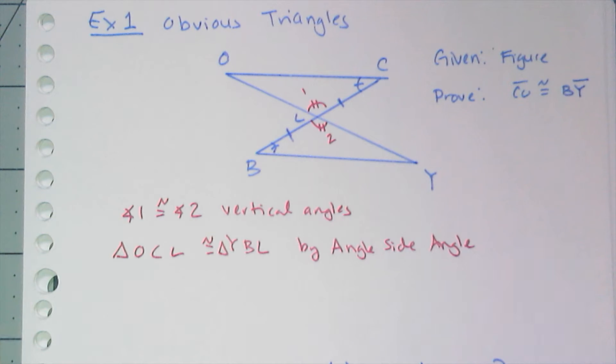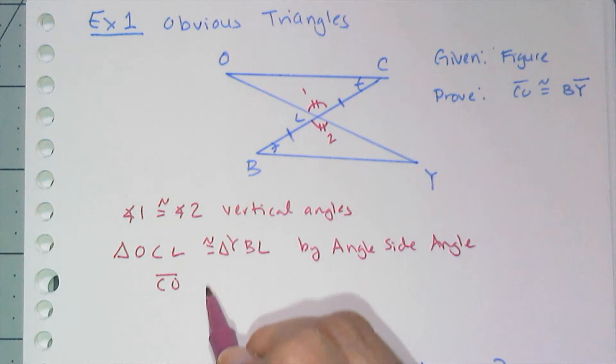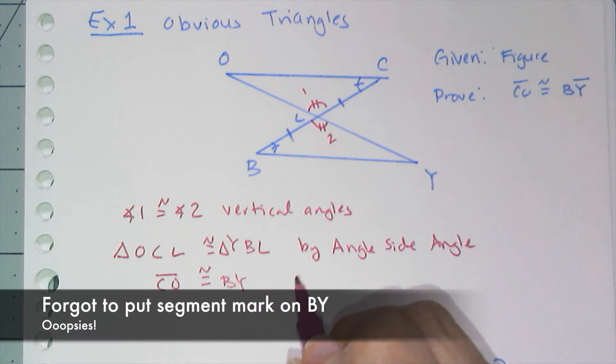And then so now, oh, it's super easy. I can say that CO is congruent to BY by corresponding parts of congruent triangles are congruent.